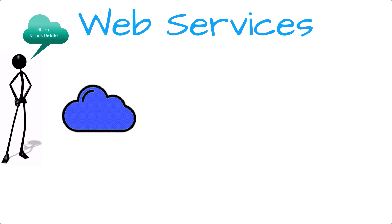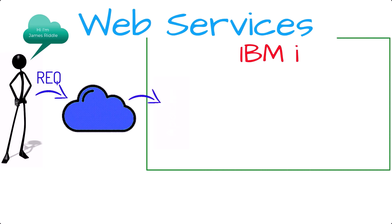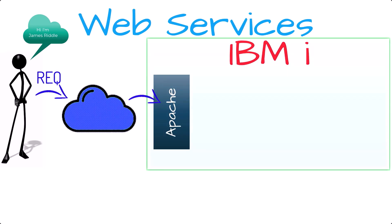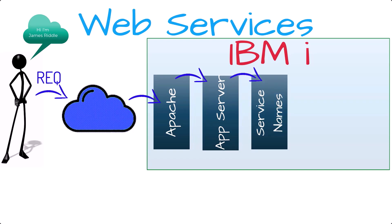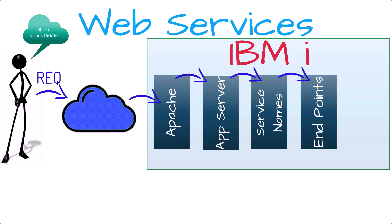Starting with a picture — paints a thousand words. We have our user who makes a web service call to us. This is known as the request, or req. The first part it touches on our IBM i is the Apache web server. Next, it will be routed through to the integrated web server. Then service names — there can be more than one service name. Personally I like to keep it down to only one service name; keep it simple. Then the individual endpoints will get executed.